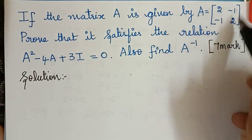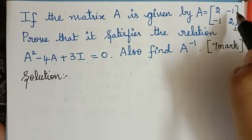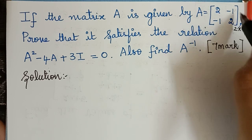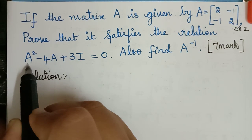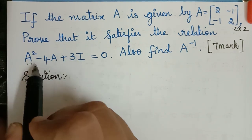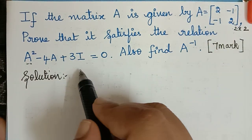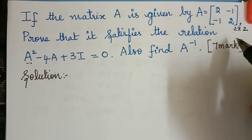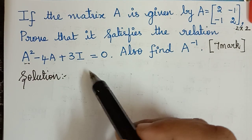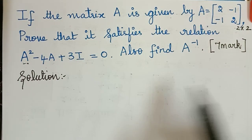In this question we are given a 2 by 2 matrix — there are 2 rows and 2 columns. We are asked to prove whether this matrix satisfies the given relation. We need to find A squared separately and then substitute A squared, A, and I into the equation. Since this is a 2 by 2 matrix, I will be the identity matrix [1, 0; 0, 1], where the diagonal elements are 1. Using that equation we will also find the inverse of matrix A.